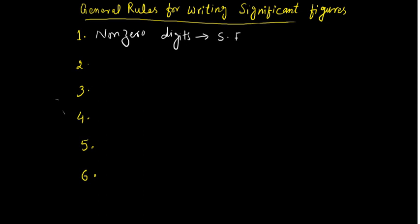For example, one show, two show, three show and so on. For example, four point two three four — one, two, three, four. That gives four significant figures. Now, the non-zero digits: every non-zero digit is significant.